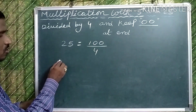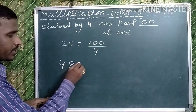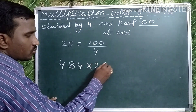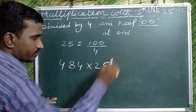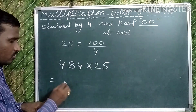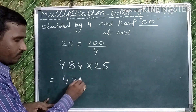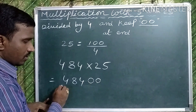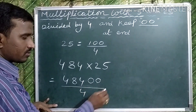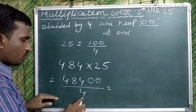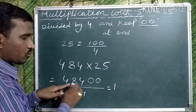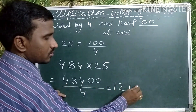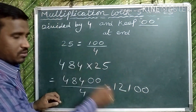Suppose take 484 multiplied by 25. In this case, 484 — keep 2 zeros at the end — 48400 — and divide by 4. 4 ones are 4; 4 twos are 8; 4 ones are 4; 0, 0. That is the answer: 12100.